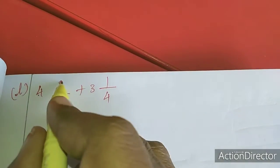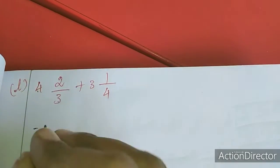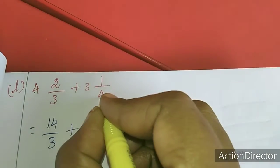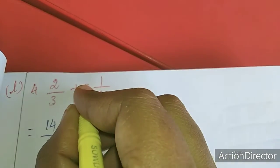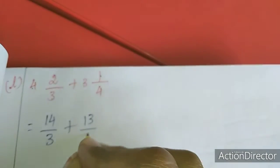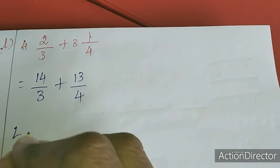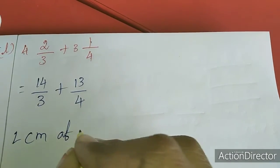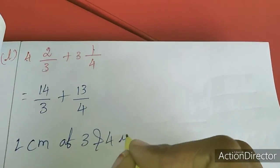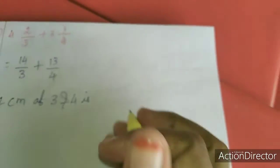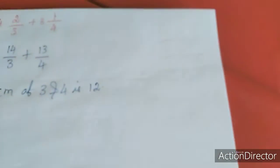3 fours are 12, 12 plus 2 is 14. So 14/3. Plus 3 twos are 12, 12 plus 1 is 13 — so 13/4. So LCM of 3 and 4 is: 3 and 4 will not come in one table, so 3 fours are 12. LCM is 12.